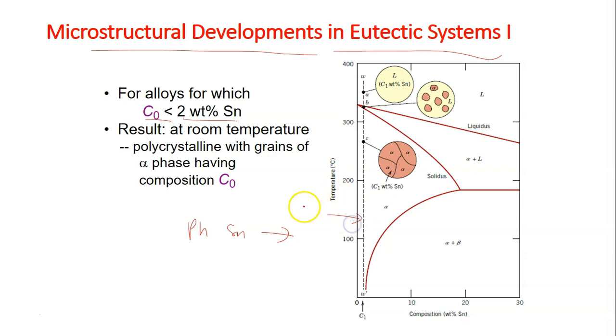So this is the almost pure region, or we can say pure region of lead. So for the lead-tin system, this includes the lead-rich alloys containing between 0 and about 2% of tin.